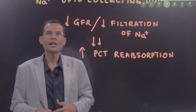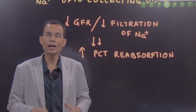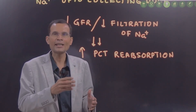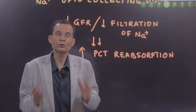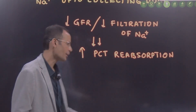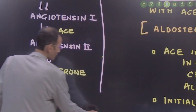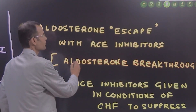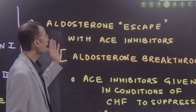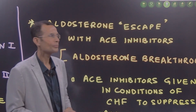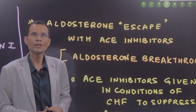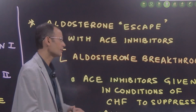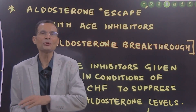Now, another interesting phenomenon also called aldosterone escape or aldosterone breakthrough has been described — one exactly opposite phenomenon also being called aldosterone escape. It is fascinating physiology. Here, aldosterone itself is going to escape. Aldosterone escapes the ACE inhibitors. That is also called aldosterone escape, and yes, it is also called aldosterone breakthrough. This time aldosterone itself is going to escape.